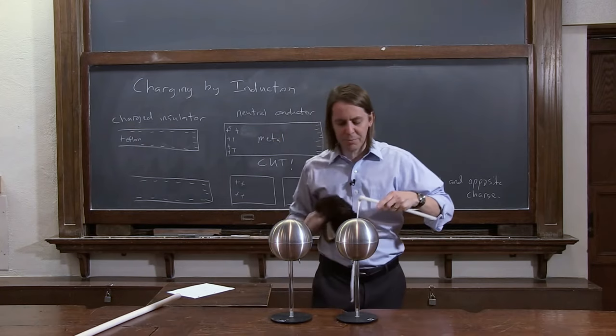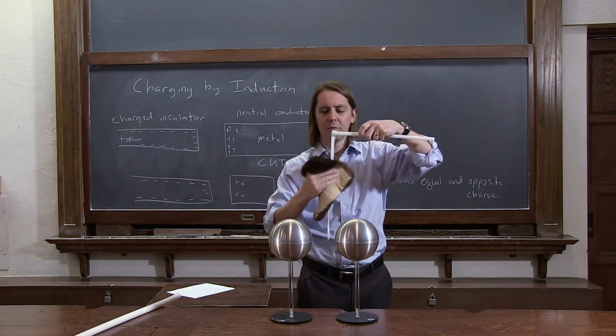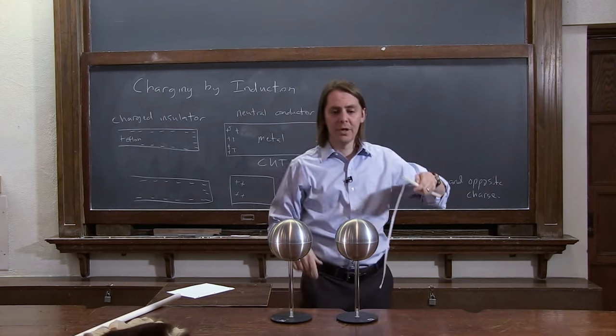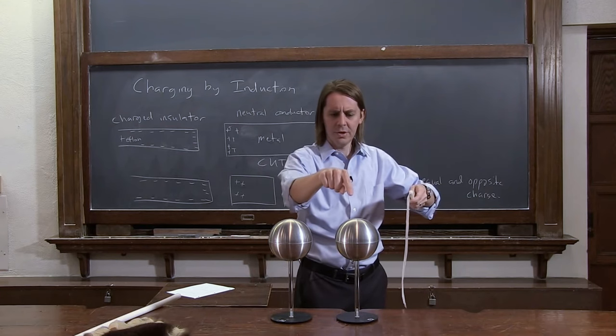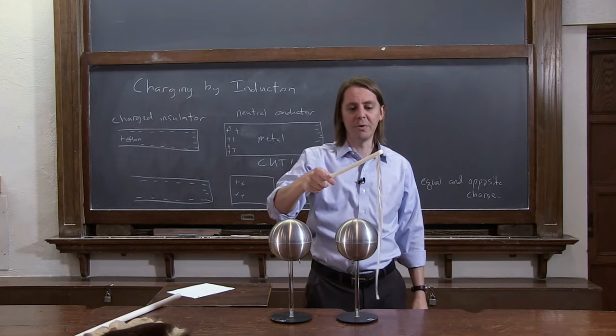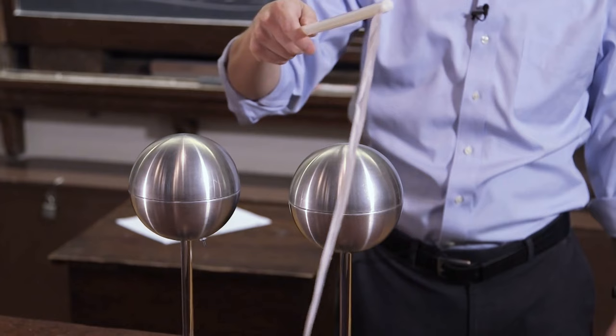Of course, you can't see it. I'm going to try to prove it with a bit of Teflon tape. We know if we rub fur on this Teflon tape, it ends up negative. So if this sphere is negative, they should repel each other. Sure enough, the tape is repelled—it doesn't want to touch the metal.